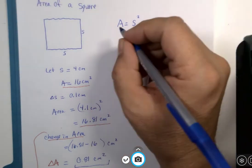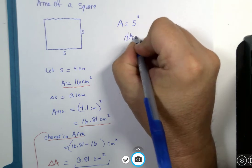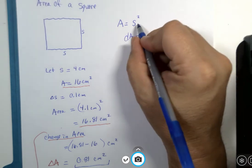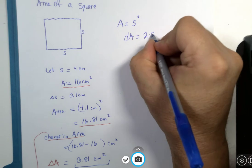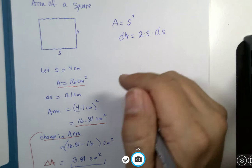So, the concept of a differential says, well, wait a second. dA is then the derivative, which is 2S times dS.